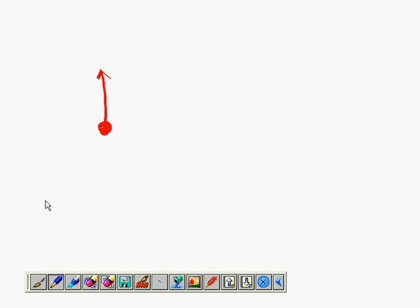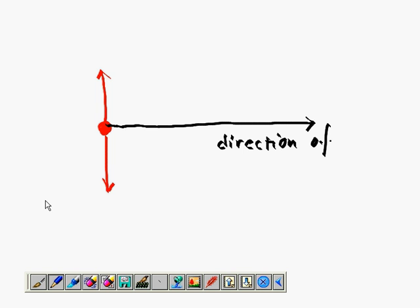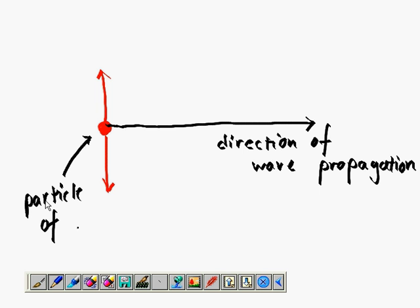So the diagram for transverse wave is this. The particles of medium oscillate up and down and it is 90 degree with the direction of the wave propagation. And this is particle of medium and it is in up-down position and it is 90 degree.